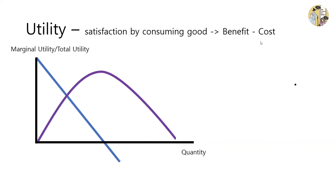Now let's take a look at another concept called utility. Utility refers to the satisfaction from consuming a certain good or product, which is simply the benefit minus the cost. There are two types of utilities: the marginal utility and the total utility. The marginal utility refers to the additional utility you gain from purchasing another unit of a certain good or service. The total utility refers to the utility you received as a whole from consuming multiple units.